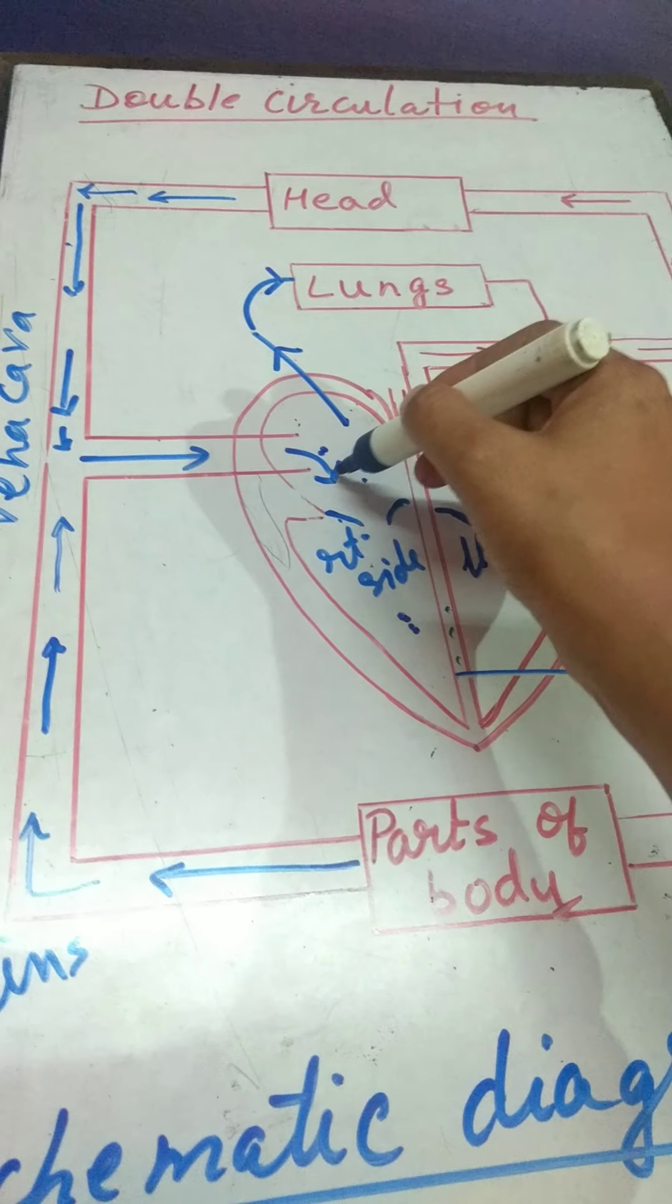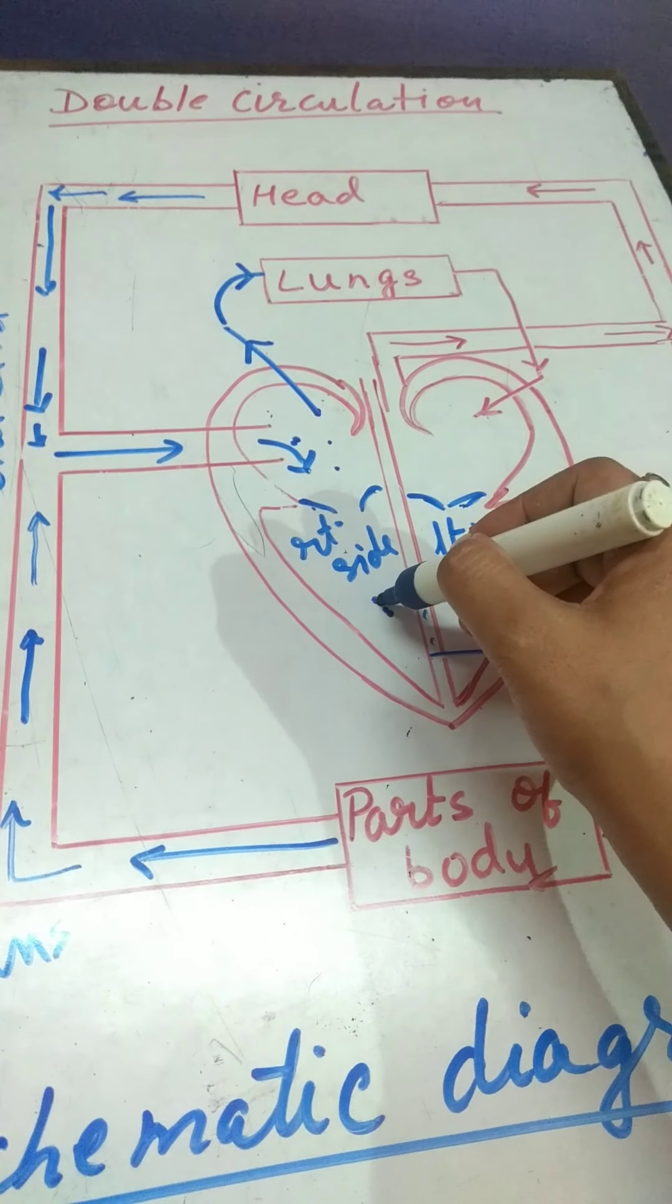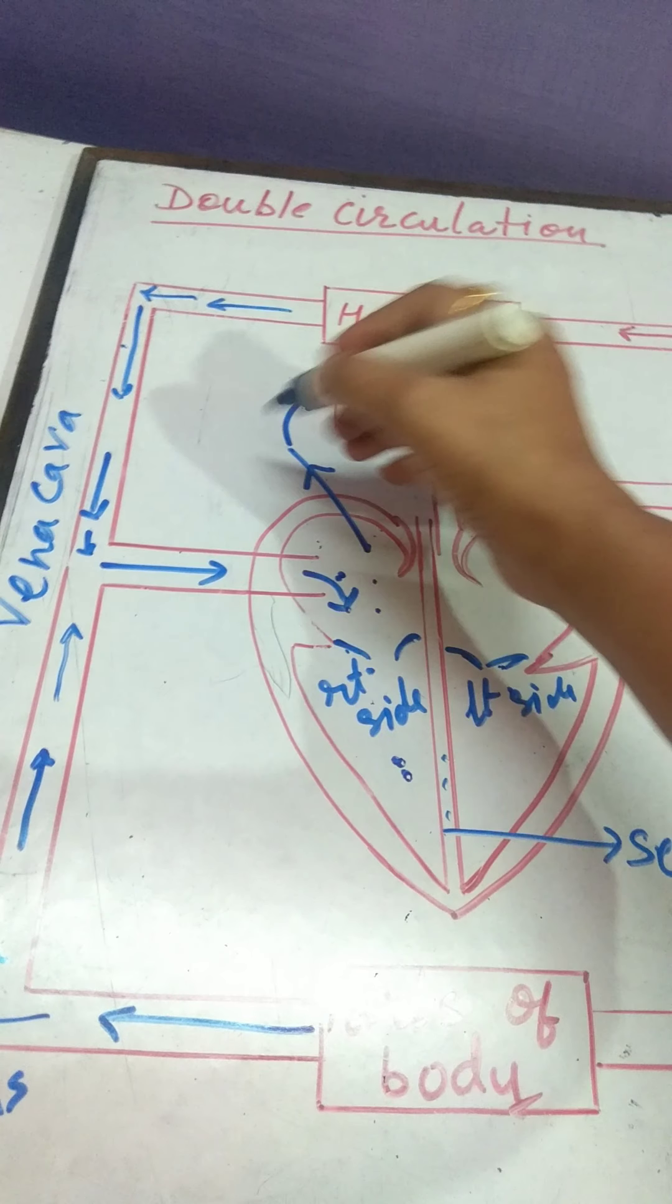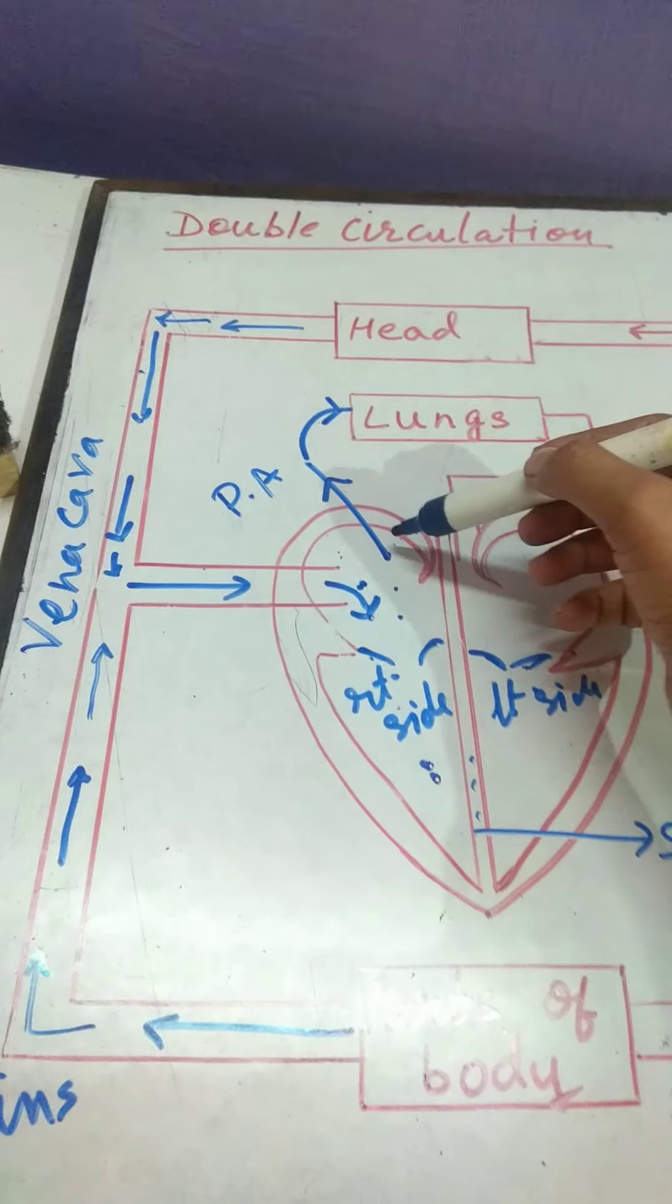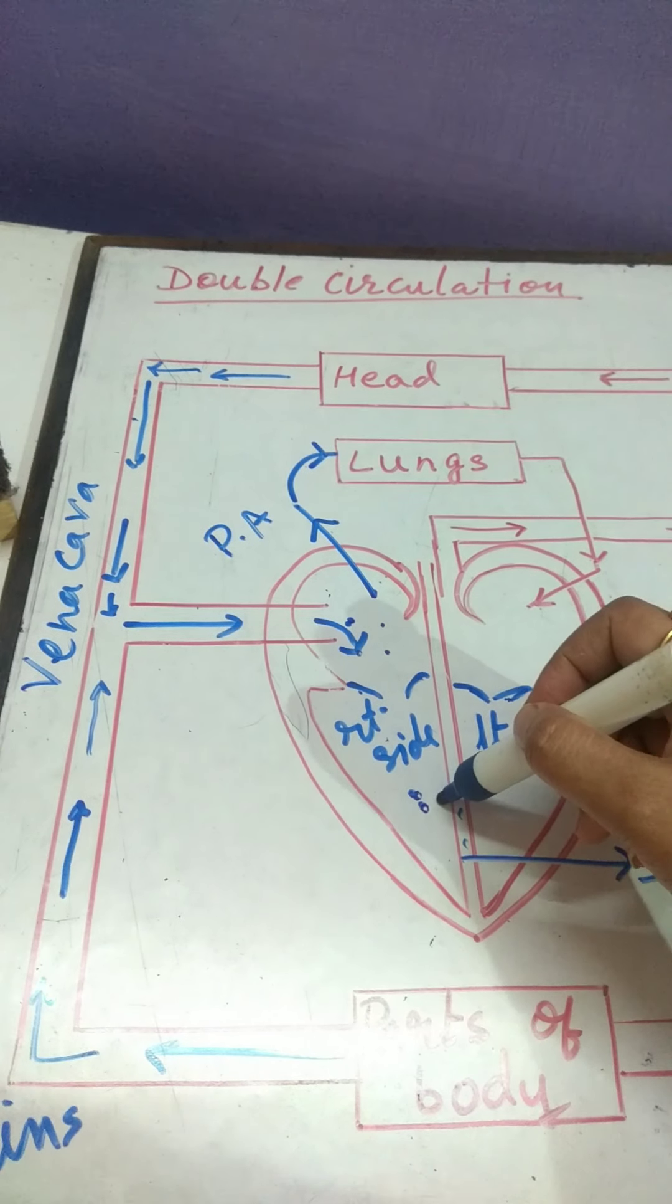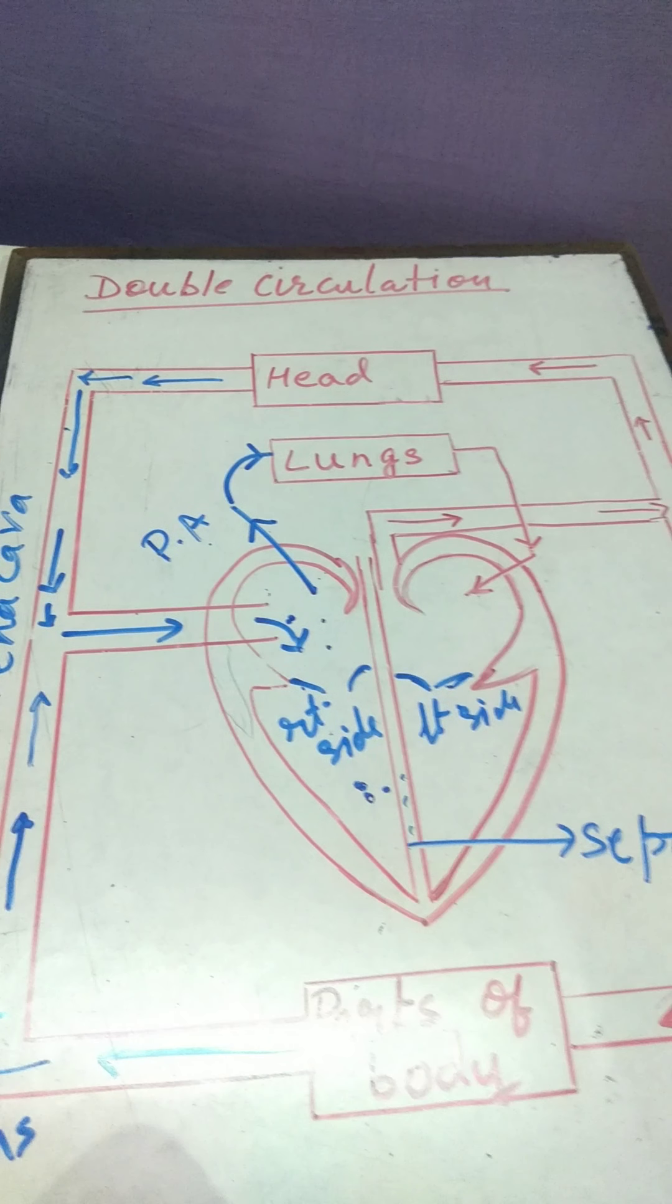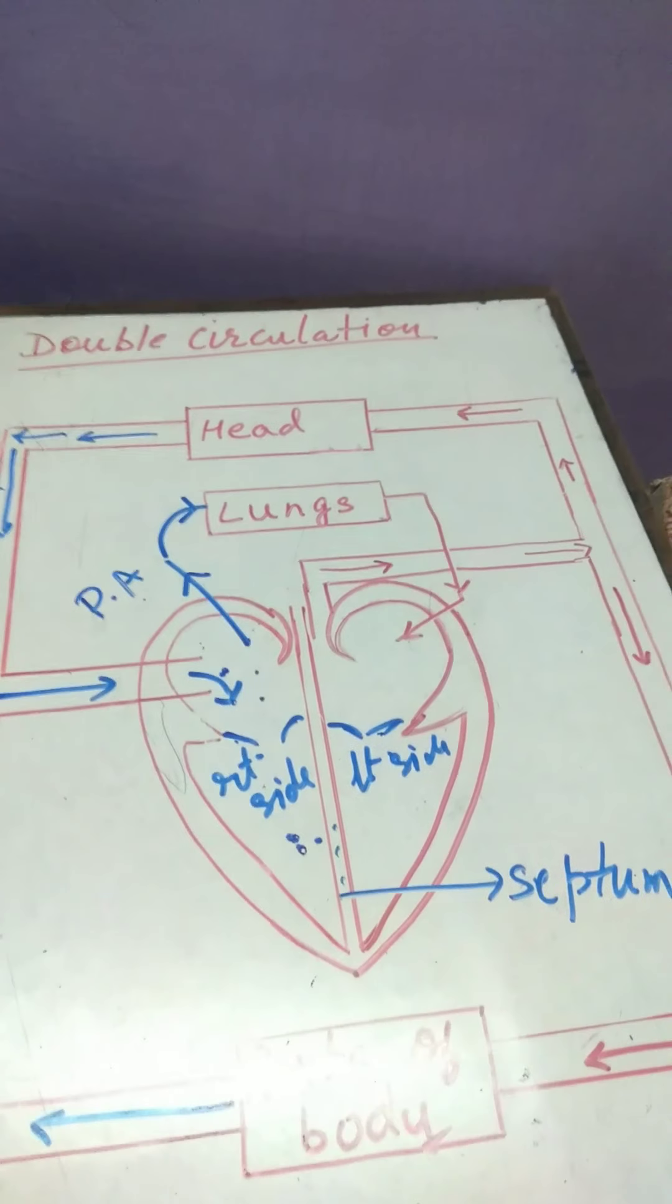Now, once from the veins, impure blood enters the right auricle, then to the right ventricle. From right ventricle, blood is carried by pulmonary artery. Blood is carried by pulmonary artery from ventricle to the lungs for purification.